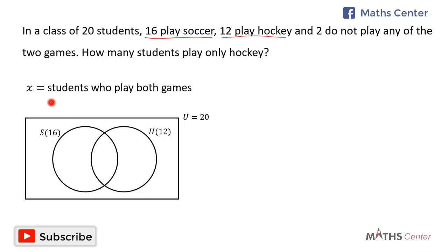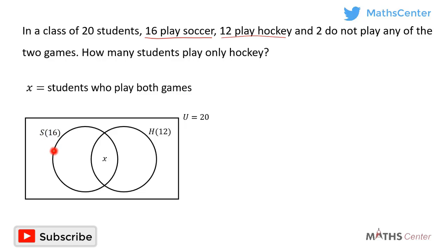Let X equal the number of students who play both games. So the intersection region is X. The number of students who play soccer only will be 16 minus X, and the number who play hockey only will be 12 minus X. The question tells us that 2 students do not play any of the two games, so the complement of S union H is 2.